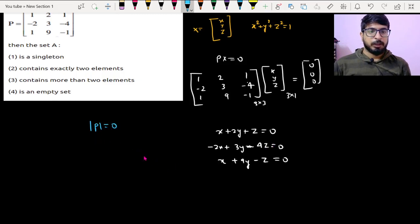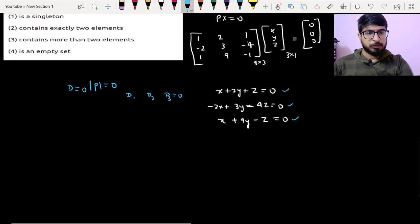I can say that there will be infinite solutions because d1, d2, d3 are already 0 because coefficients are 0 here. So determinant is also 0, so infinite solutions will be there. Let's try to solve these equations.